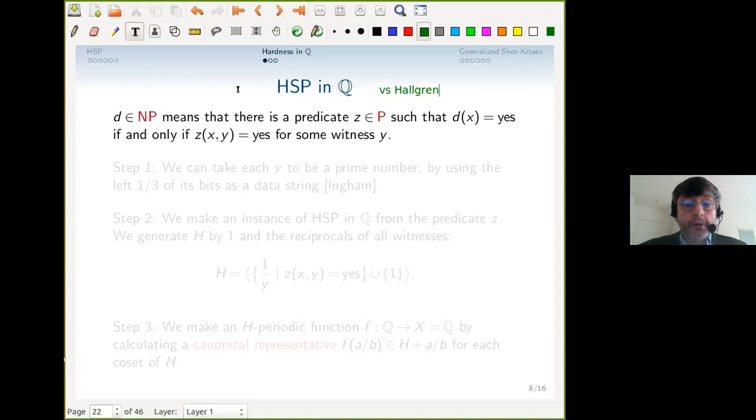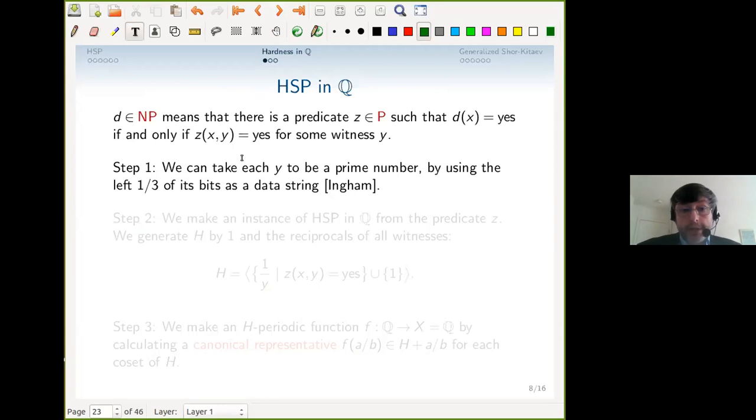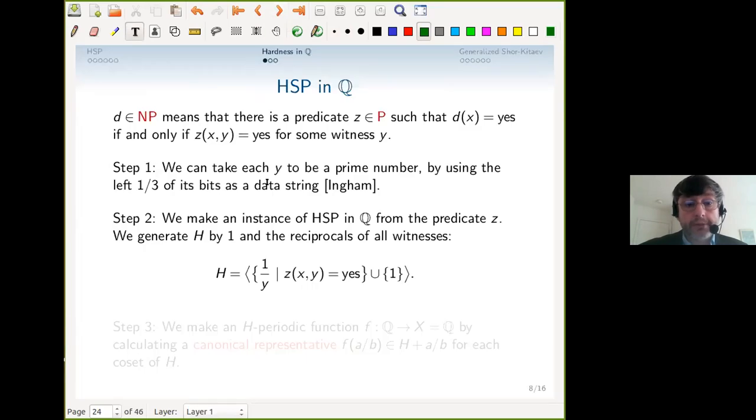When you have a problem in NP—take any problem in NP, doesn't have to be 3-SAT—it has a predicate with test witnesses, and the answer is yes if and only if there exists an accepted witness. In step one, I want to reduce this to the hidden subgroup problem in Q. We can take the witnesses to be prime numbers—take the left third of the digits of y, and by a number-theoretic theorem of Ingham, you can use prime numbers as a language for accepting witnesses in NP.